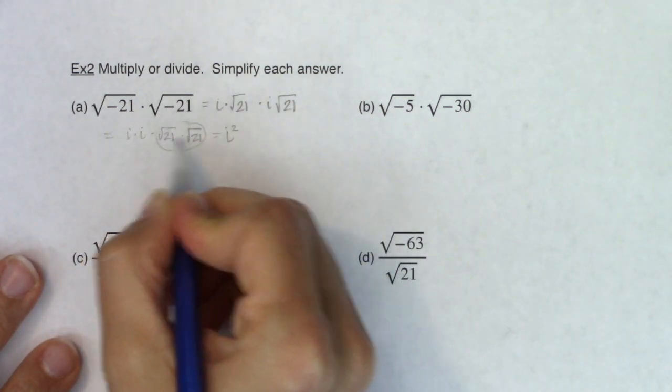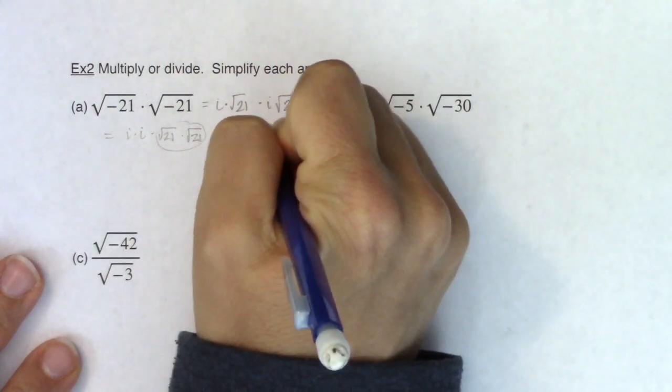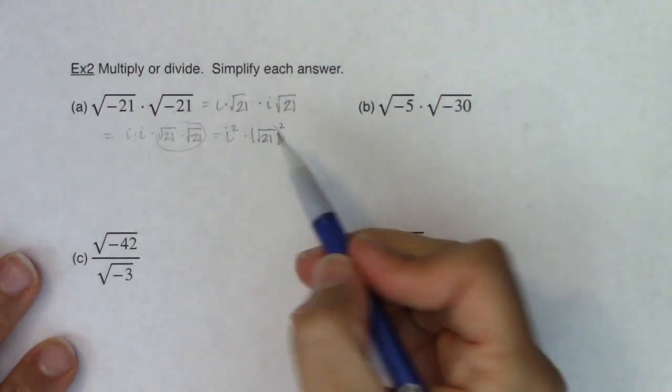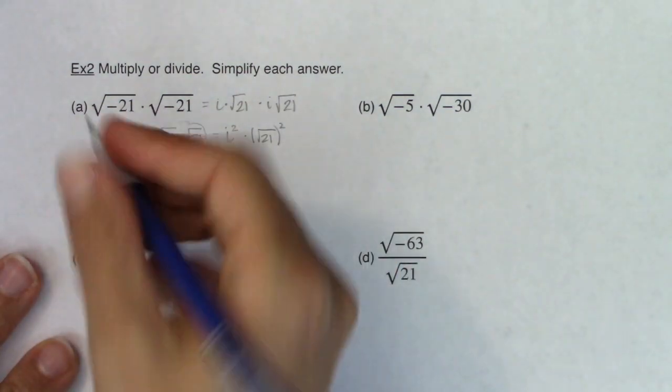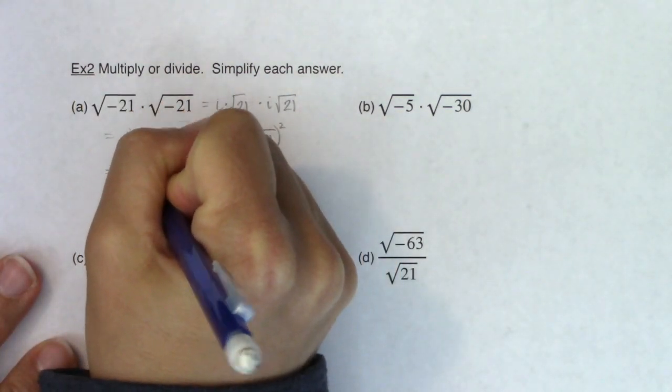The square root of 21 times the square root of 21, I can write this out in that form if you want, or maybe some of you are seeing it already that the square root of 21 times the square root of 21 is just 21. So at this point I'm dealing with i squared times 21.